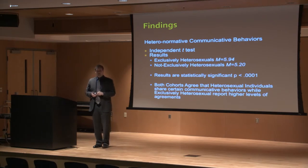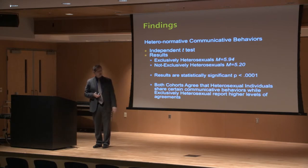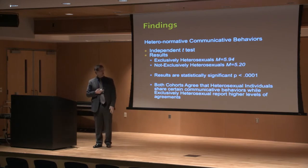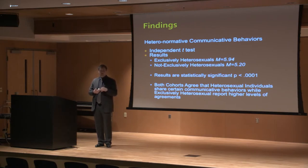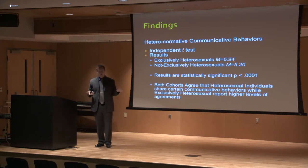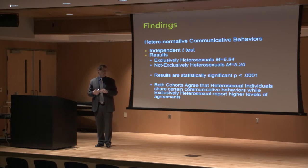The next scale measured was heteronormative communicative behaviors. An independent t-test found that exclusively heterosexuals had a mean of 5.94, and non-exclusively heterosexuals had a mean of 5.20. The results were statistically significant at the .001 level, meaning the results did not occur by chance. Both cohorts agree that heterosexual individuals do share certain communicative behaviors; however, exclusively heterosexuals report higher levels of agreement with the particular index.